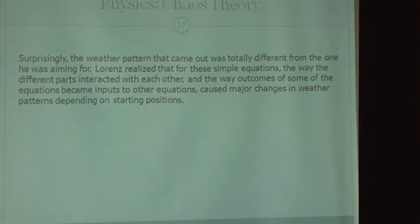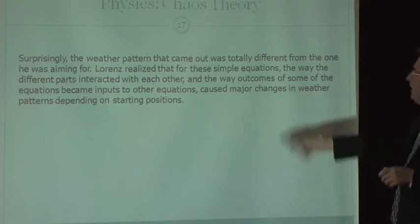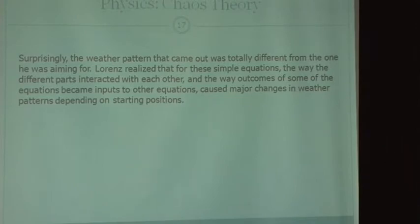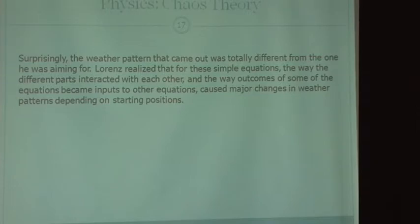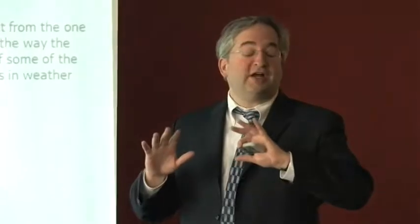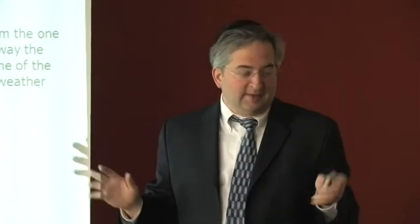But rather than plugging .506127, he just plugs into .506, which is very close. In fact, it's one thousandth away from what it was. And he wants to see the same weather pattern. Surprisingly, the weather pattern that came out was totally different from the one he was aiming at. And even though he had put in all the numbers very close, it was totally different. Lorenz realized that for these simple equations, the way the different parts interact with each other, and the way outcomes of some of the equations become inputs to other equations cause major changes in weather patterns, depending on starting positions.